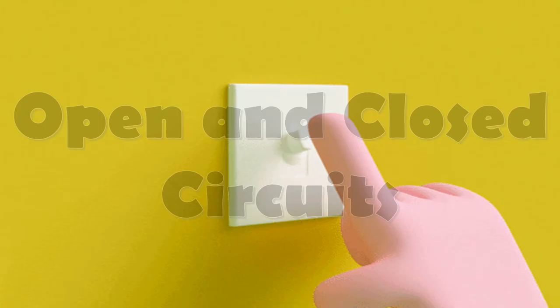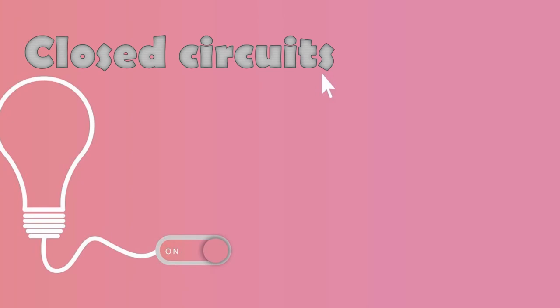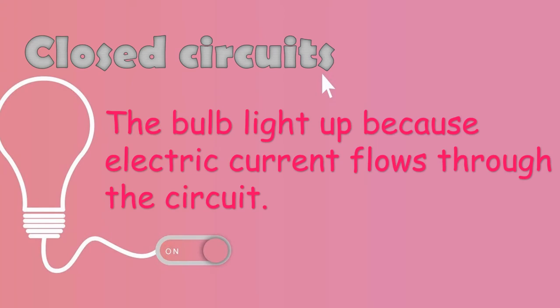Now let's proceed to the open and closed circuits. Please listen carefully because this is a little tricky. An electric current will only flow if the parts in an electric circuit form a complete path with no gaps. First, we have the closed circuits. In a closed circuit, the bulb lights up because electric current flows through the circuit.